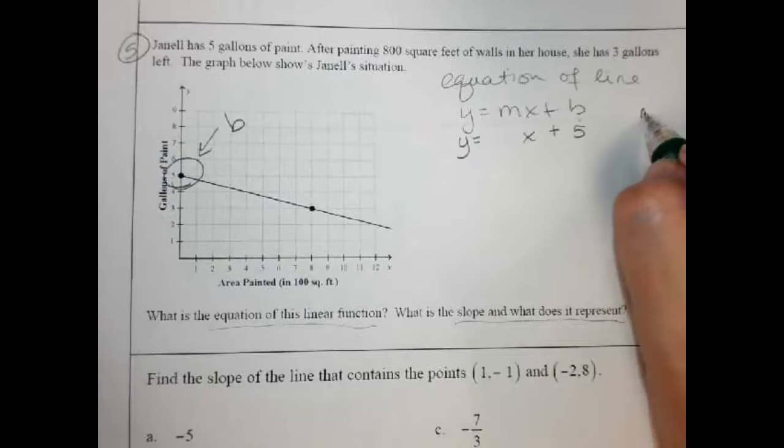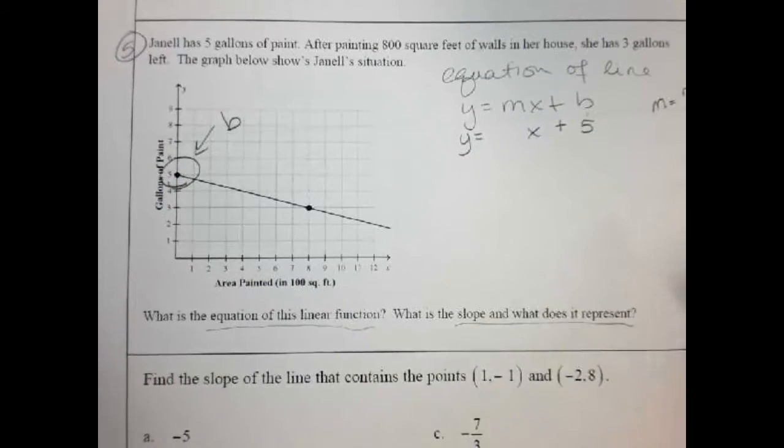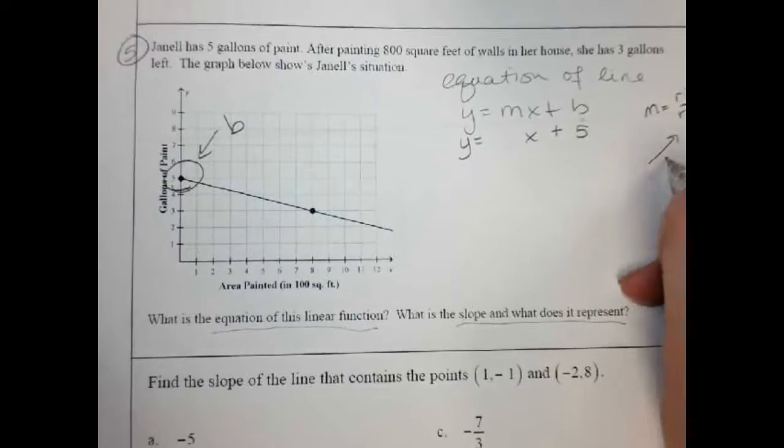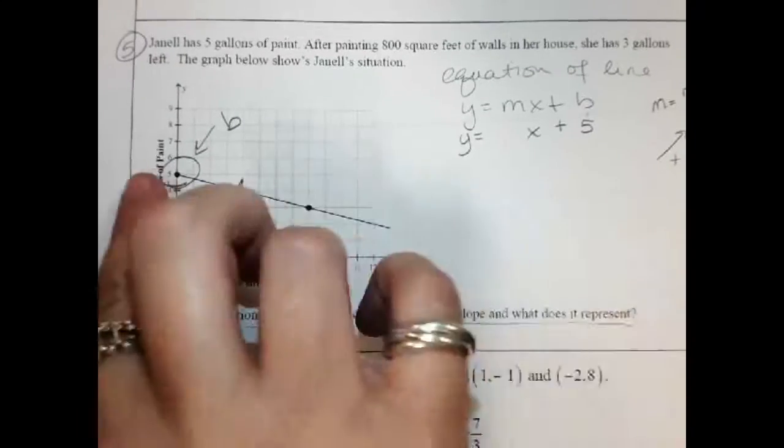Slope is rise over run. If it's going like this, that's uphill, it makes it positive. If it goes like that, that's downhill and it makes it negative. So this is negative because it's going downhill.